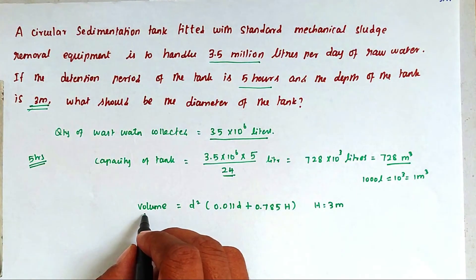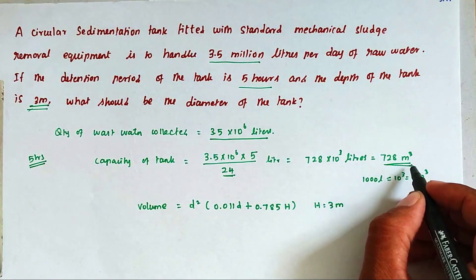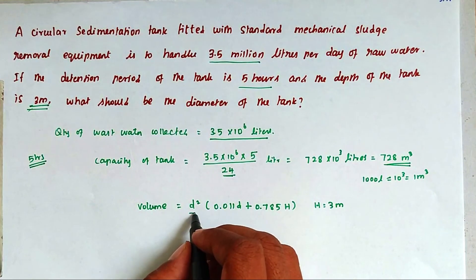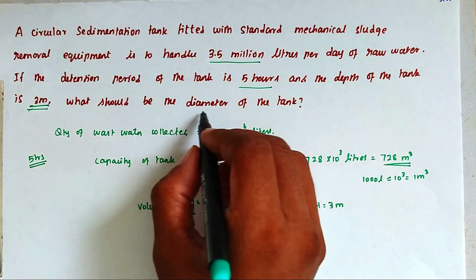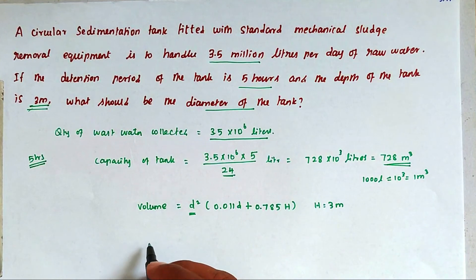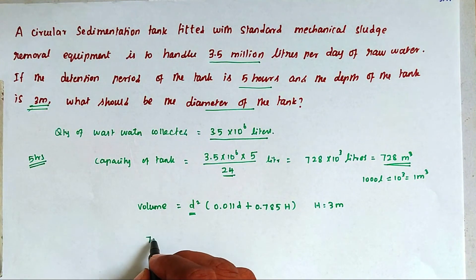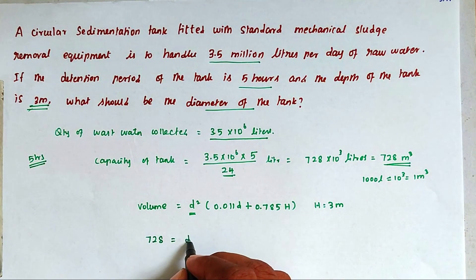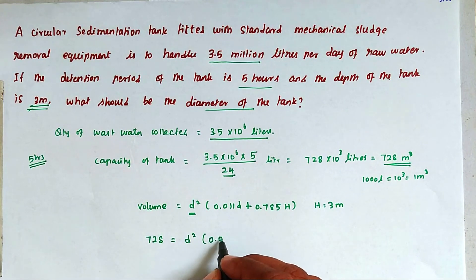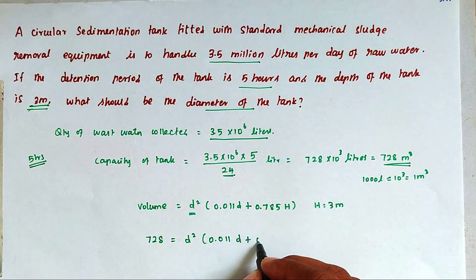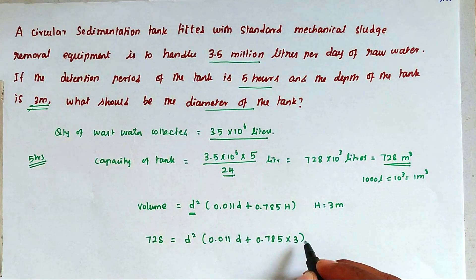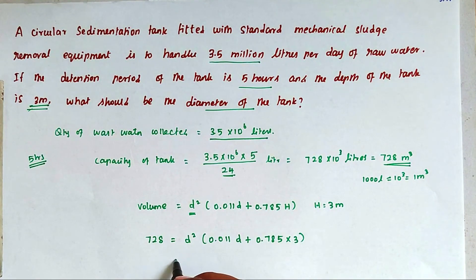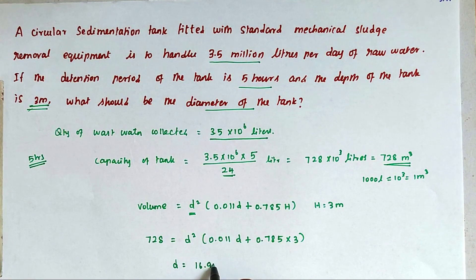The volume we found is 728 cubic meter, and the only unknown is D, the diameter of the tank. Substituting all values: 728 equals D squared into 0.011D plus 0.785 into H value 3. Solving this, we get the value of D equal to 16.95 meter.